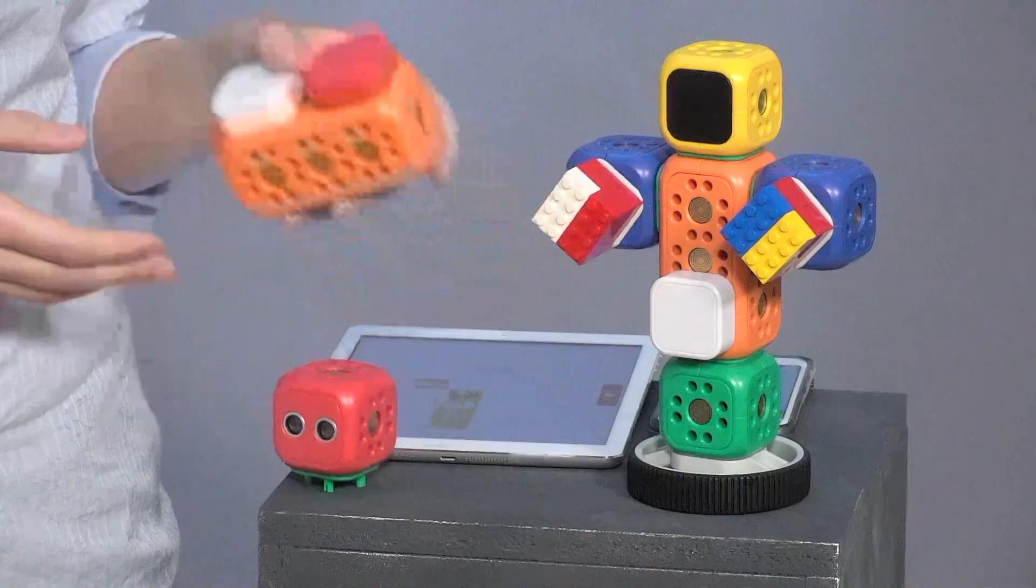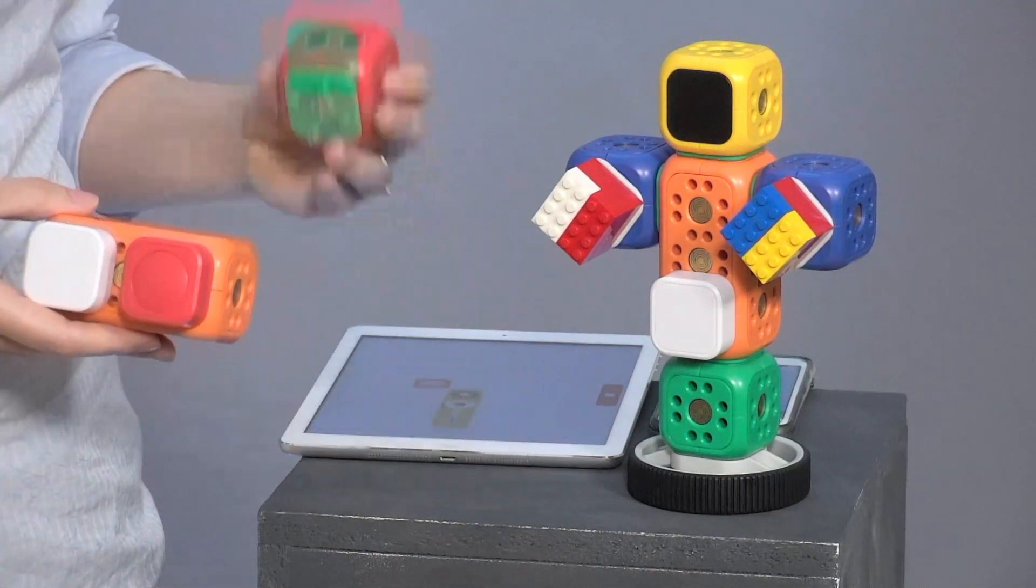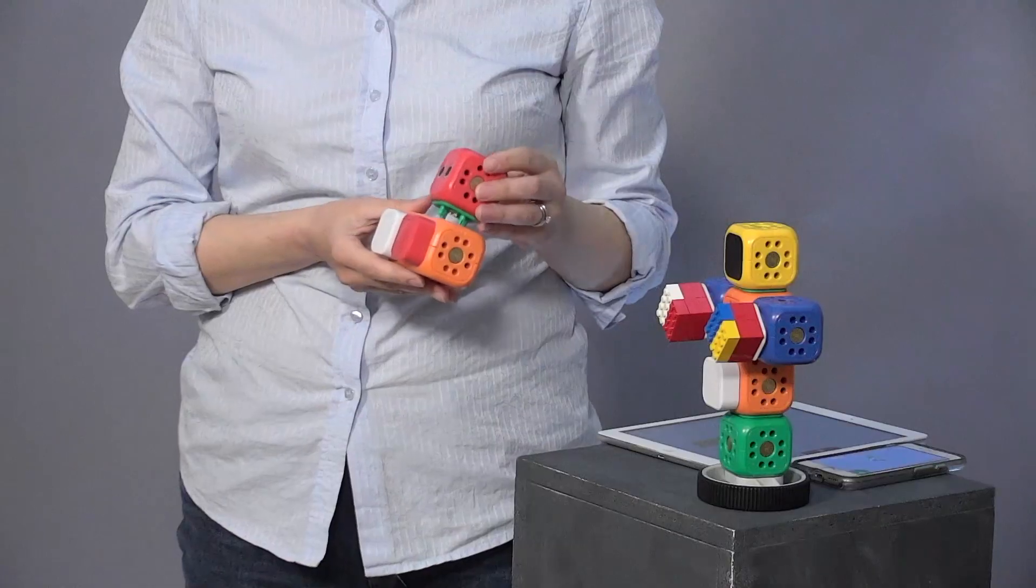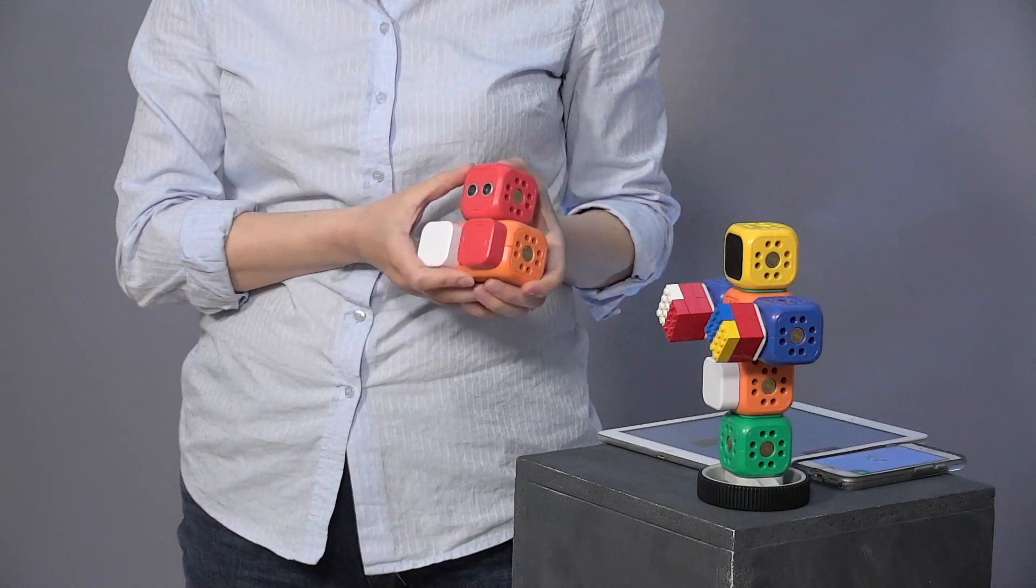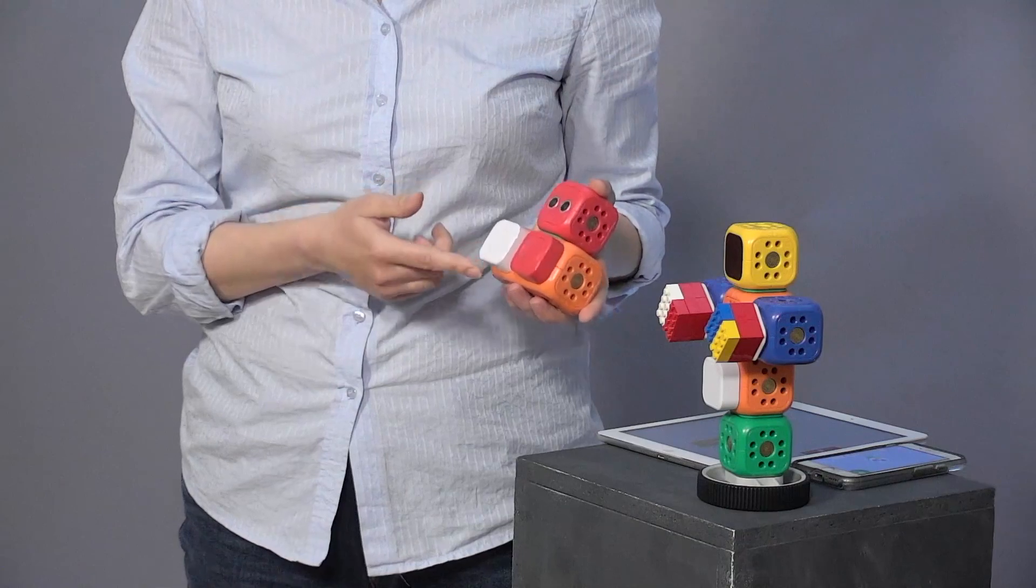For that, we need a brain, ultrasonic sensor—it measures a distance to an obstacle, to an object in front of it—LED light and a button.